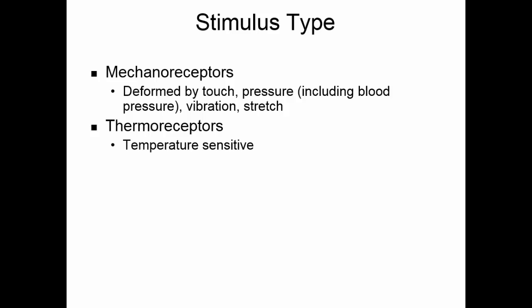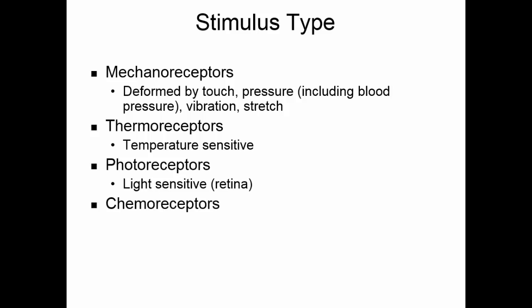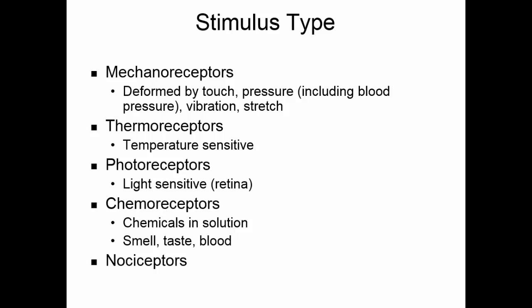Thermoreceptors are temperature sensitive. Photoreceptors will pick up on changes in light — we find these only in the retina of the eye. Chemoreceptors respond to chemicals in solution. Your sense of smell and taste rely on chemoreceptors, and there are a number of chemicals dissolved in the blood that chemoreceptors check on. Nociceptors respond to painful stimuli.